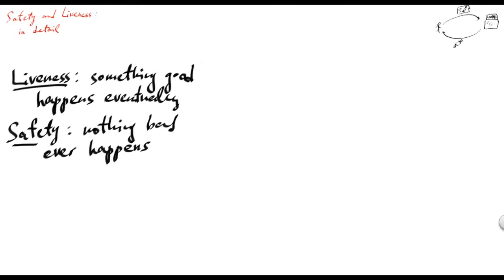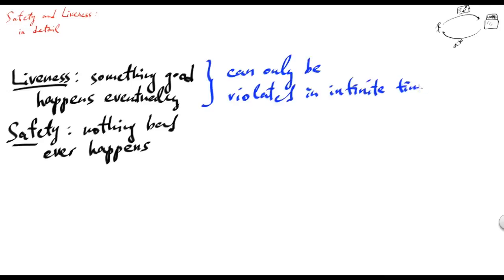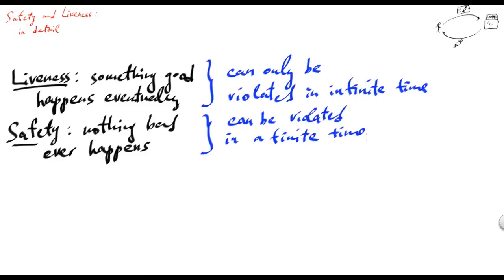By definition, we would expect that liveness is something that can only be violated in an infinite time. In contrast, safety can be violated in a finite time. These intuitive notions of liveness and safety were originally introduced by Lamport in the end of the 70s.